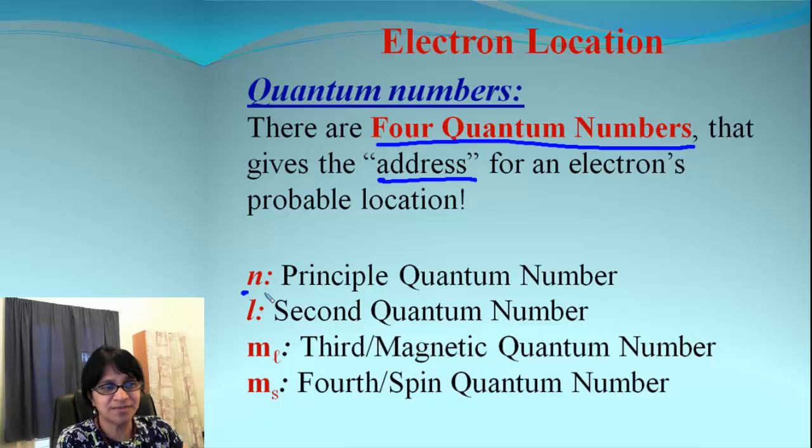There is the first one, N, principal quantum number. Then there is L, which is simply we call as second quantum number. Then we have ML, that stands for magnetic quantum number or third. And then there is Ms, which is fourth or spin quantum number.